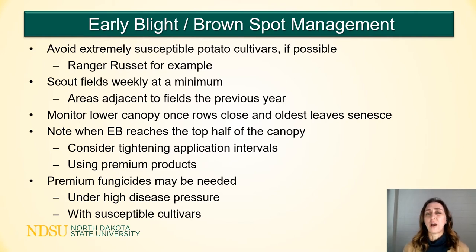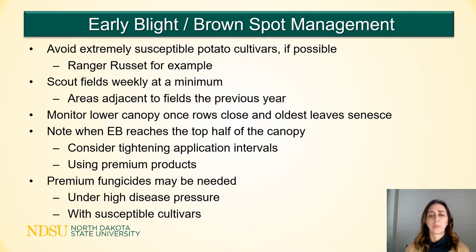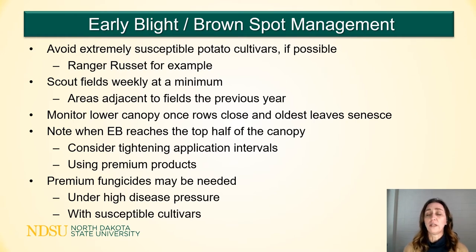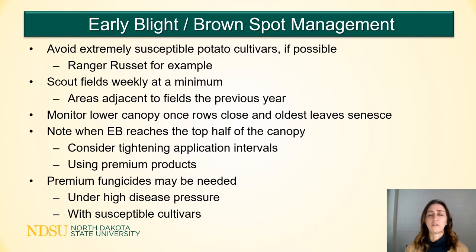Early blight will try to hide in the lower canopy — it starts there where dew is more prevalent and longer lasting. So it's important to dig into the canopy when scouting and really look at those lower leaves for lesions. Early blight can be found in the mid and top of the canopy, and when it gets up in the upper canopy under conducive conditions, it can be extremely hard to manage. If you do get to that point, you'll probably need to shorten the interval between fungicide applications — from a 10-day interval down to 7, or from 7 down to 5.